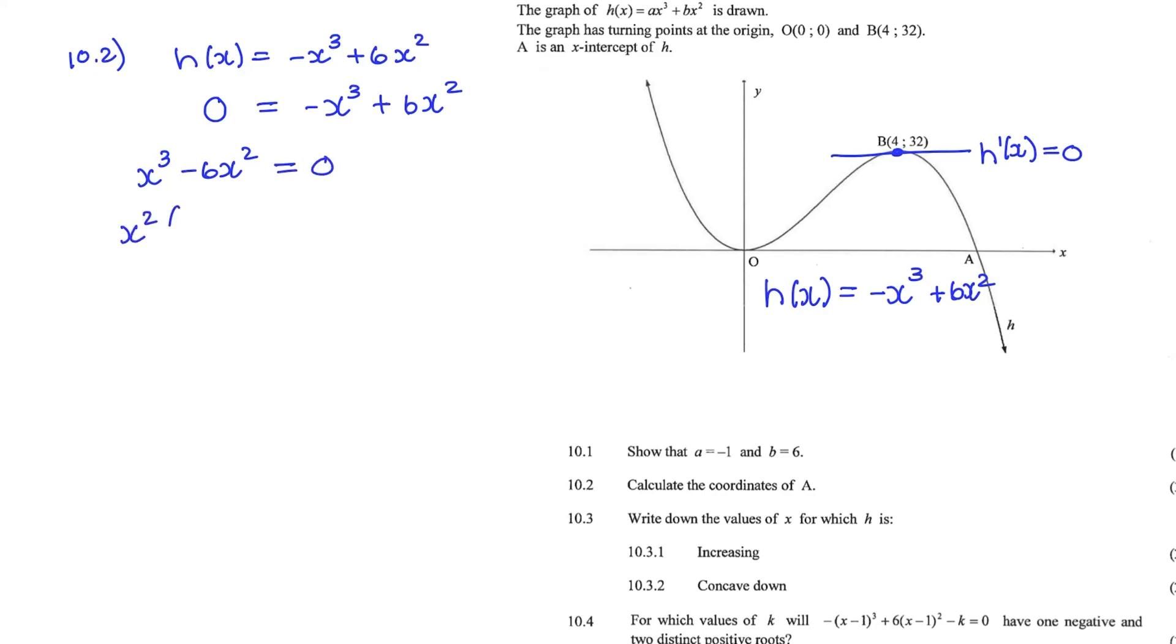Then I'll take out x squared as a common factor. And now I can solve for x. So x squared would be equal to 0 or x would be equal to 6.